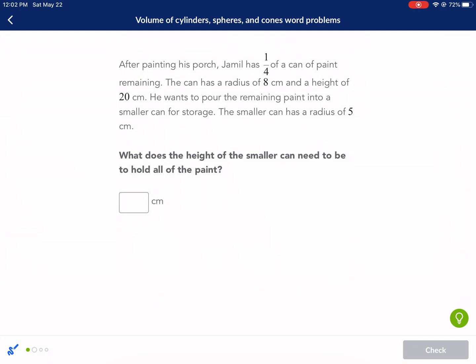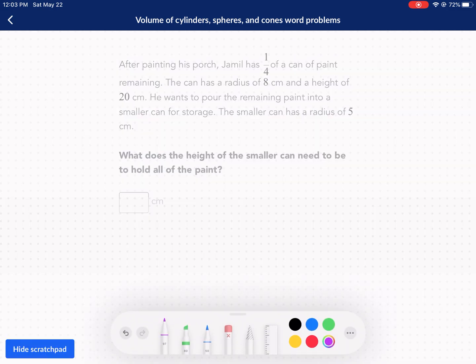After painting his porch, Jamil has one-fourth of a can of paint remaining. The can has a radius of 8 centimeters and a height of 20. He wants to pour the remaining paint into a smaller can for storage. The smaller can has a radius of 5 centimeters. What does the height of the smaller can need to be to hold all of the paint? This is a great problem. Never seen it before, but I'm liking it.